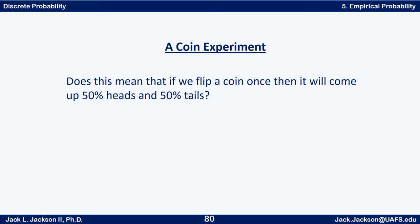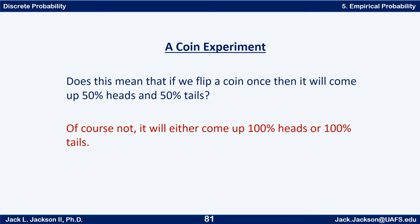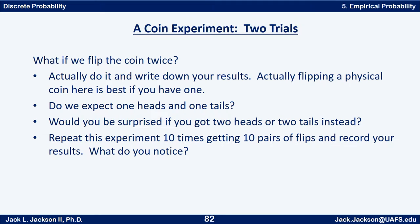Does this mean that if we flip a coin once it will come up 50 percent heads and 50 percent tails? No, of course not. It's either going to come up 100 percent heads or 100 percent tails on one flip — you can't get 50 percent with one flip. What if we flip it twice? Actually flip it twice and write down your results. You might expect one head and one tail, but would you be surprised to get two heads or two tails instead? Probably not.